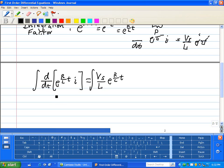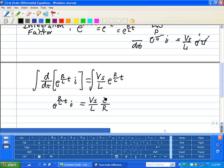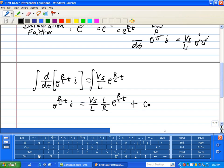We have on the right side, e to the R/L times t times i is equal to Vs over L, times L over R, times e to the R/L times t. A result of our integration plus our integration constant c.